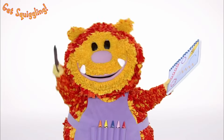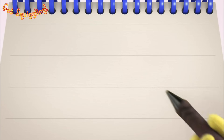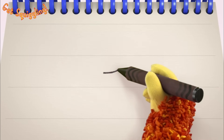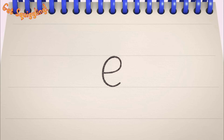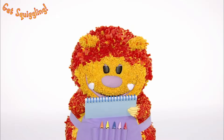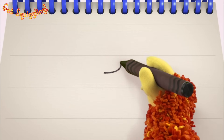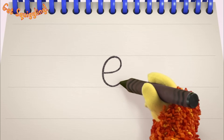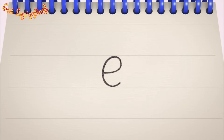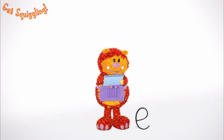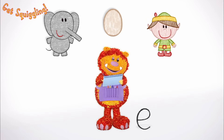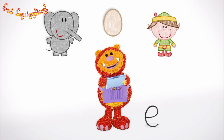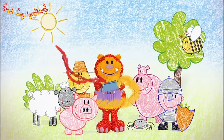Have you got your squiggle pads and squiggle sticks ready? Let's get squiggling! Holding your squiggle stick like this, move it across and round — the letter E! Let's squiggle it again: go across and round — the letter E! Shall we squiggle some things that start with the letter E? An elephant, an egg and an elf — they all begin with the letter E!